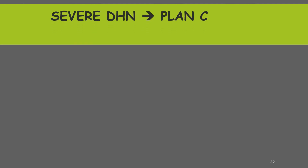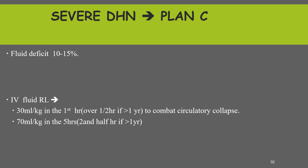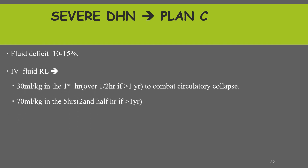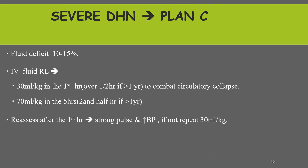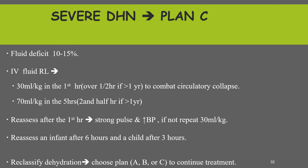The third type is treatment of severe dehydration from diarrhea — treated by treatment plan C. Fluid deficit is thought to be from 10 to 15 percent and we should give IV fluid, specifically Ringer's lactate: 30 ml per kg in the first hour and 70 ml per kg in the next five hours if the child is less than one year; 30 ml per kg over half an hour and 70 ml per kg over two and a half hours for older children. We should reassess after the first hour; if the child is slightly improving but not totally improved, give repeated 30 ml per kg. Reassess an infant after six hours and the child after three hours, re-grade the degree of dehydration, and manage accordingly.